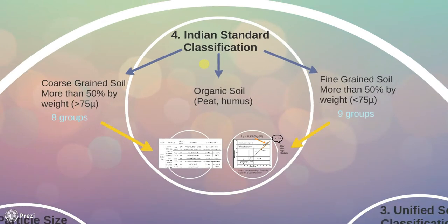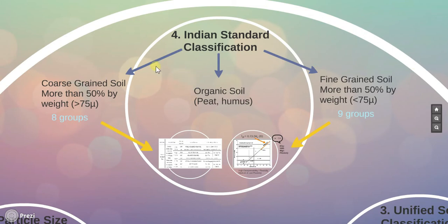The Indian Standard Soil Classification System is also known as ISCS. It was first developed in 1959 and then revised in 1970. The revised version is in many respects similar to the Unified Soil Classification System. The fine-grained soils in IS classification system are subdivided into 3 categories: coarse-grained soil, organic soil, and fine-grained soil, as against only 2 categories in USCS.